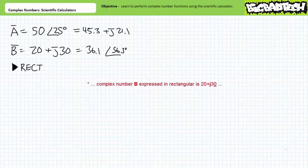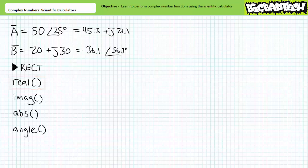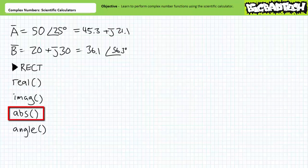Additionally, complex number B expressed in rectangular is 20 plus J30, and complex number B expressed in polar is 36.1 at an angle of 56.3 degrees. There may be times you find it necessary to isolate individual components of a complex number. The TI-89 offers these abilities inside the catalog entry. The real entry returns only the real horizontal X component, the imaginary entry returns only the imaginary vertical Y component, the absolute entry returns only the magnitude of a polar complex number, and the angle entry returns only the angle of a polar complex number.